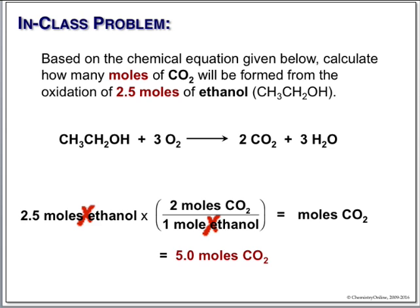We simply do our multiplication: two and a half times two — I can even do that in my head. That gives us five moles of CO₂. If we add two and a half moles of ethanol, we would get five moles of CO₂. Our ratio is one gives us two; two and a half times two is five.